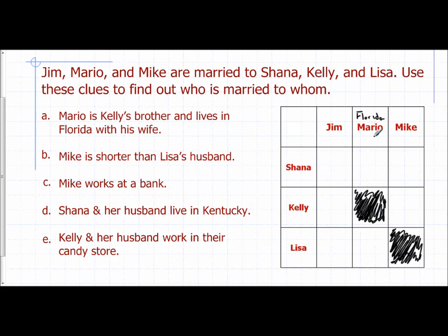We're also told Mike works at a bank, so I'm going to put 'bank' above Mike in case that's helpful. Shayna and her husband live in Kentucky, so I'll put 'Kentucky' above Shayna. That means Mario and Shayna cannot be married, because Mario lives in Florida — so I'll cross that one out.